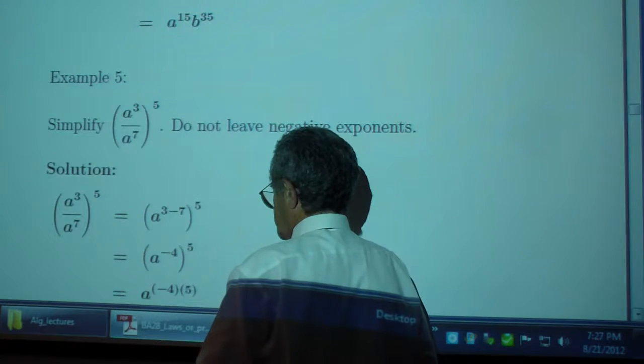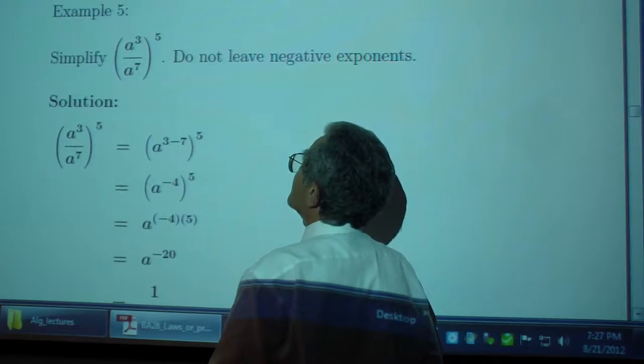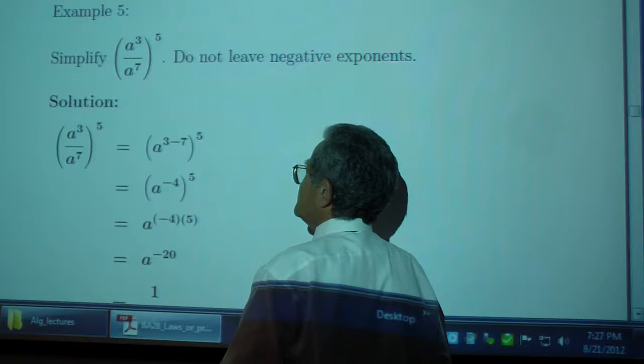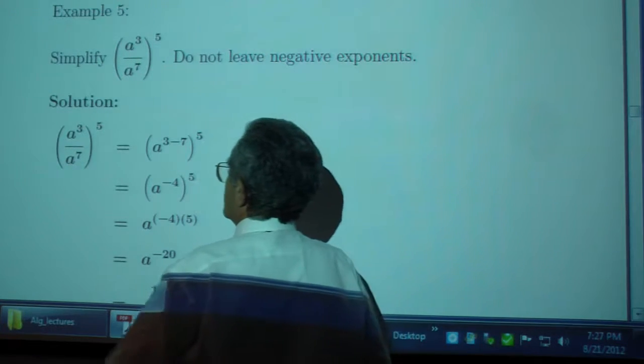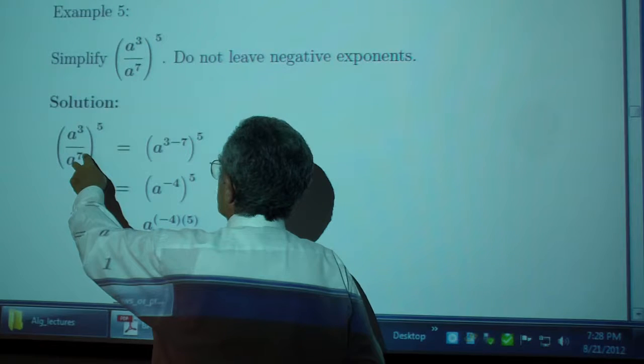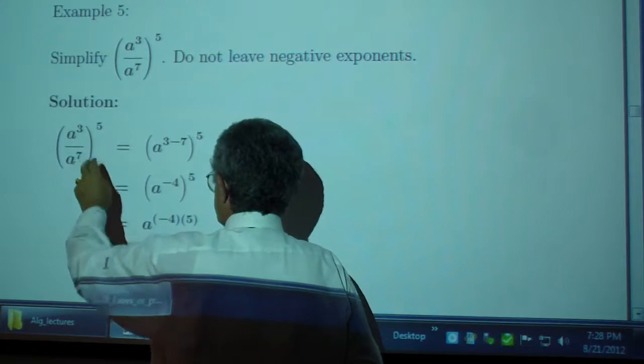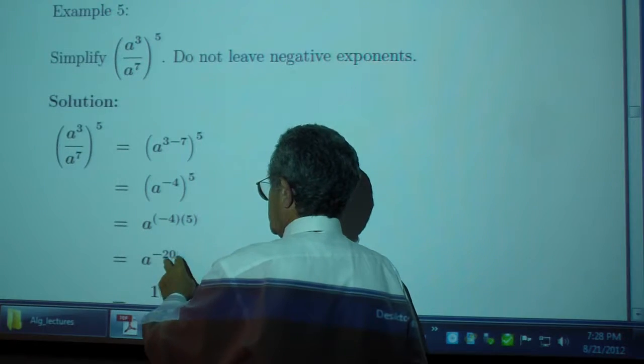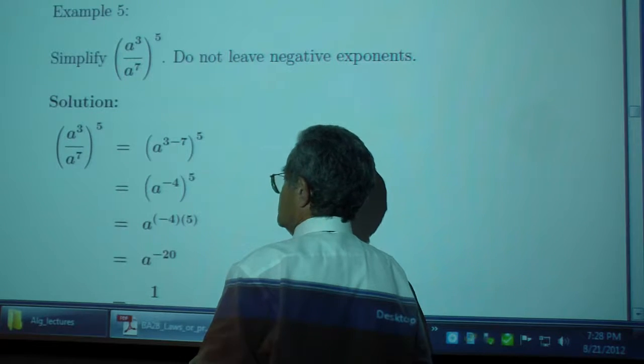Or you can do it this way. You can simplify this further. I told you 8 to the 15th, 8 to the 35th, so 15 minus 35, which is negative 20.